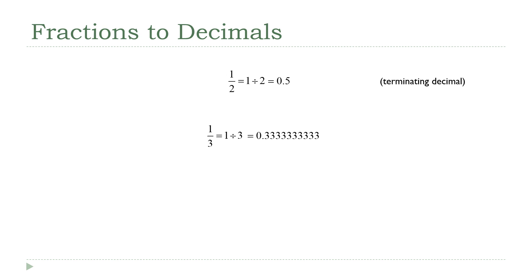Every fraction can be written as a decimal, but not necessarily as a decimal with a finite number of digits. To write 1 third as a decimal, you have to have infinitely many 3s. The way we write that is by putting three little ellipsis dots after the decimal version. This gives us an example of a non-terminating decimal, also called a repeating decimal, because the digits eventually start to repeat.